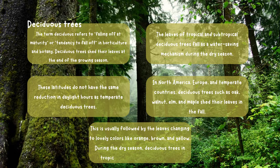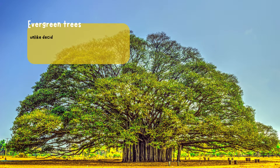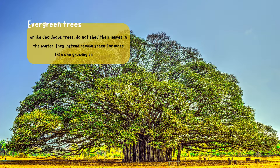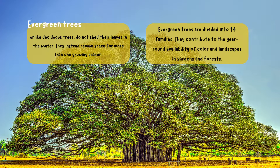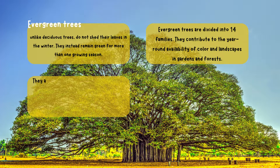During the dry season, deciduous trees in tropical countries shed their leaves. Evergreen trees, unlike deciduous trees, do not shed their leaves in the winter. They instead remain green for more than one growing season. Evergreen trees are divided into 14 families. They contribute to the year-round availability of color and landscapes in gardens and forests.